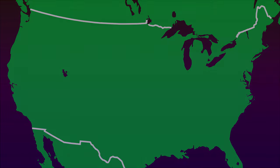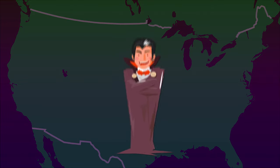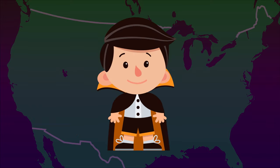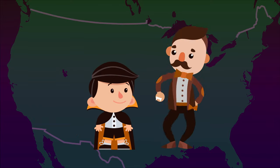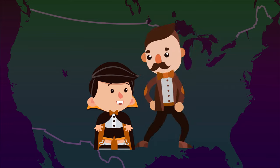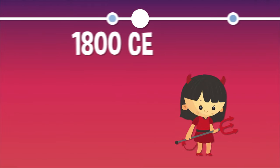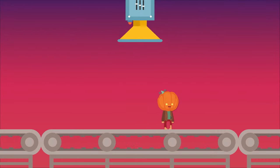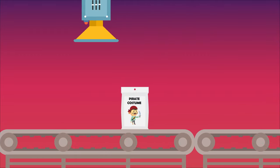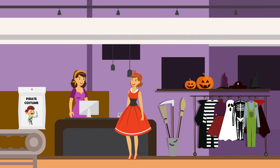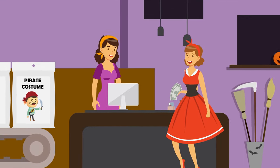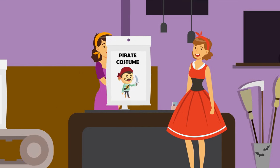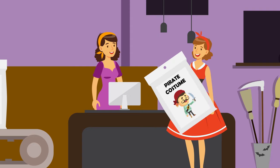At first, costumes in the US tended to have a Victorian Gothic style that we think of as classic Halloween today, and were made at home using everyday items and fabrics. But by the 1930s, that started to shift. Big companies started manufacturing mass-produced Halloween costumes that parents could buy in the store. Lots of moms and dads jumped at the chance to buy a costume they didn't have to make themselves, as trick-or-treating became more and more popular across the country.